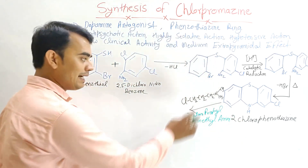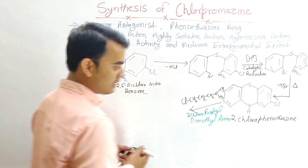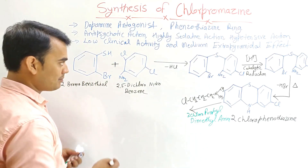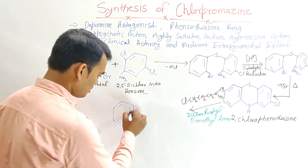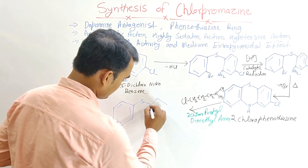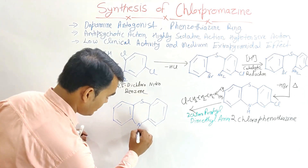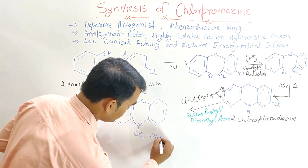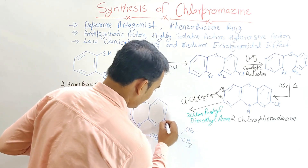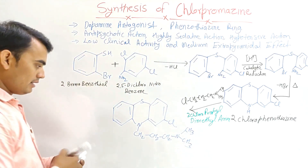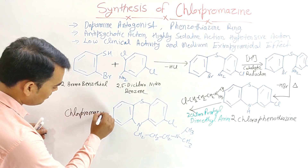2-Chlorophenothiazine is then reacted with 3-chloropropyldimethylamine. The chlorine removes a hydrogen, and the propyl chain — CH₂CH₂CH₂ — with the dimethylamine group attaches to the nitrogen of the phenothiazine ring. The final product is chlorpromazine.